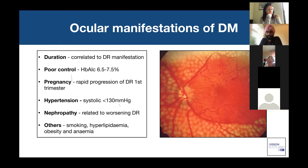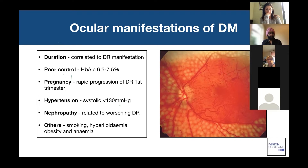Hypertension is an important risk factor — patients with poorly controlled blood pressure are more likely to progress with diabetic retinopathy changes. It's always important to ask patients with diabetic retinopathy about their kidneys, since diabetes is end organ damage and patients with diabetic changes in the eye are likely to have similar changes in their kidneys. Other risk factors include smoking, high cholesterol, obesity, and anemia.